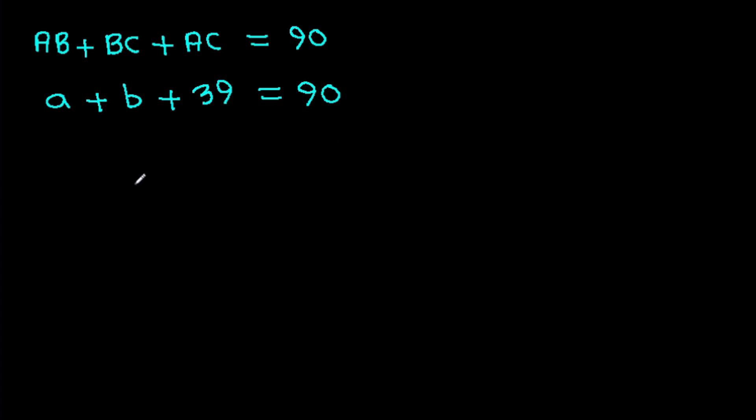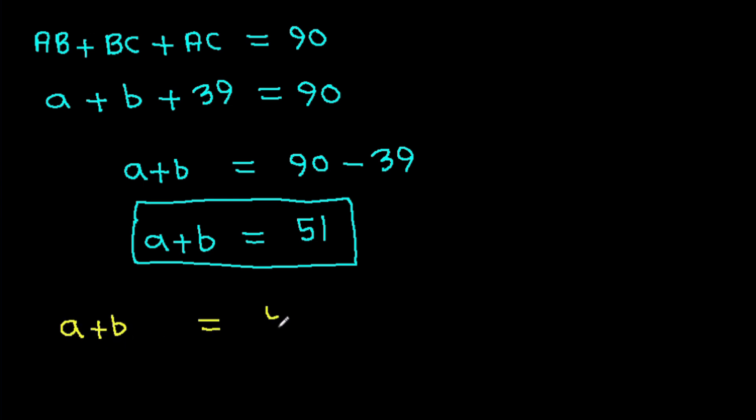And a plus b will be 90 minus 39, so a plus b equals 51. We have a plus b is 51.